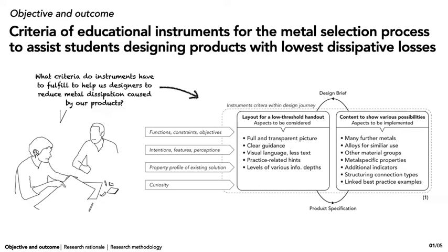In terms of design, for example, attention should be placed on a full and transparent picture, clear guidance, and visual language with less text. In terms of content, for example, many different metals should be considered along with their alloys.